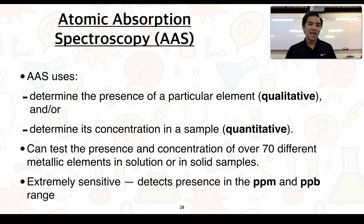Atomic absorption spectroscopy or AAS for short can be used to determine the presence of a particular element which we can think of as qualitative analysis and or determine its concentration in a sample which is a quantitative analysis. It can test the presence and concentration of over 70 different metallic elements in solution or in solid samples. It is extremely sensitive, it can detect the presence in the parts per million and parts per billion ranges.